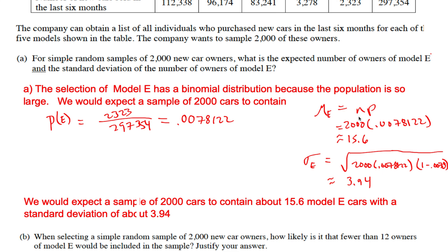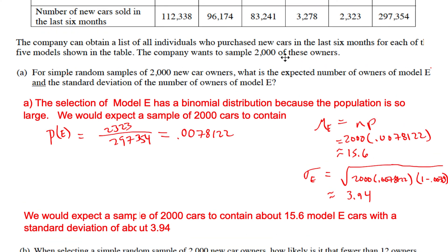The mu of model E should equal n times p, or 2000 times that decimal right there, and that gives us 15.6. That's how many cards we should expect if we pull a sample of 2000 that are model E. Then the standard deviation, we can use the formula n times p times q, take square root, and we're good there. Always end with a context statement. We would expect a sample of 2000 cars to contain about 15.6 model E cars with a standard deviation about 3.94.